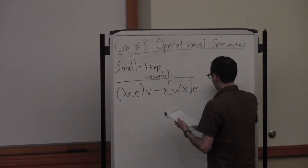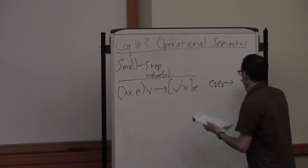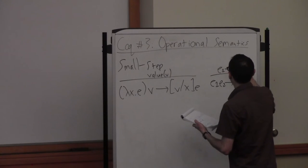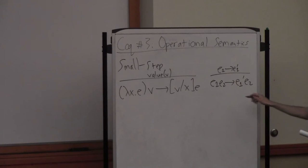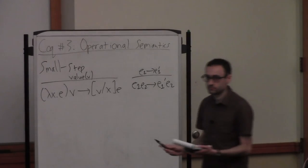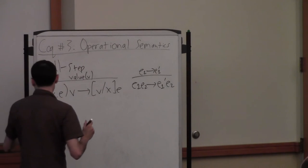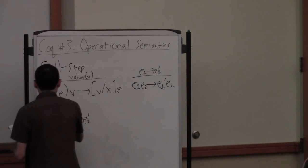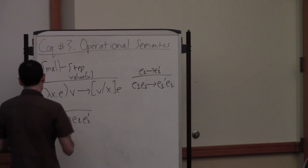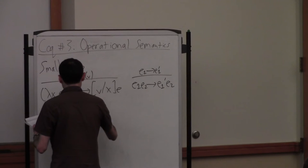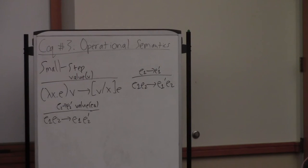Another rule says, here's how to make some progress evaluating an application expression. It says, if you're able to step the first of the subterms in an application, then you can sort of port that step to work inside the larger context of the application. You can take a step on the left-hand side of the application and you can perform it, leaving alone whatever appears on the right-hand side. And there's one symmetrical rule to that one that completes the definition. You might be able to guess how this works. This one lets us take a step on the right-hand side of an application under the condition that the left-hand side is already a value.